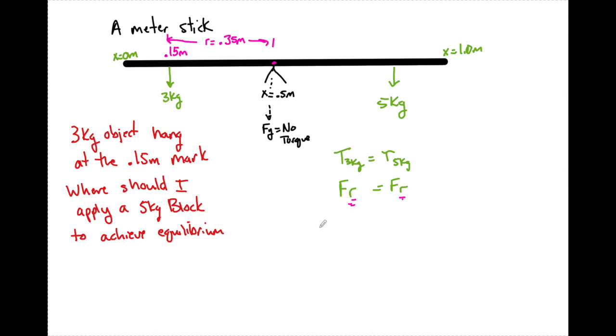I'm going to say three kilograms times 10 meters per second squared, that's going to give me the weight times 0.35 meters. That is the torque of this three kilogram mass. And what I want to solve for over here is the five kilograms times 10 meters per second squared times R or the location from the lever arm that that five kilogram mass should be.